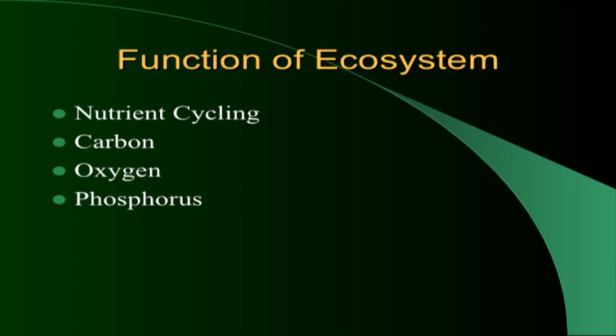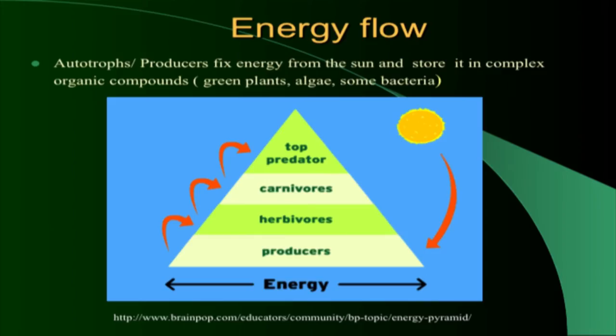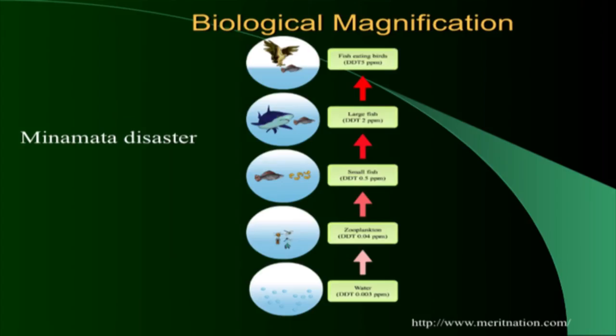Nutrient cycling — carbon, oxygen, phosphorus cycling — you are all aware of this. You can give students assignments on how energy is transferred from one trophic level to another: from producers (plants) to herbivores, carnivores, and then top predators. Biomagnification is also an important concept — the e-learning lab has a small animation for this as well.